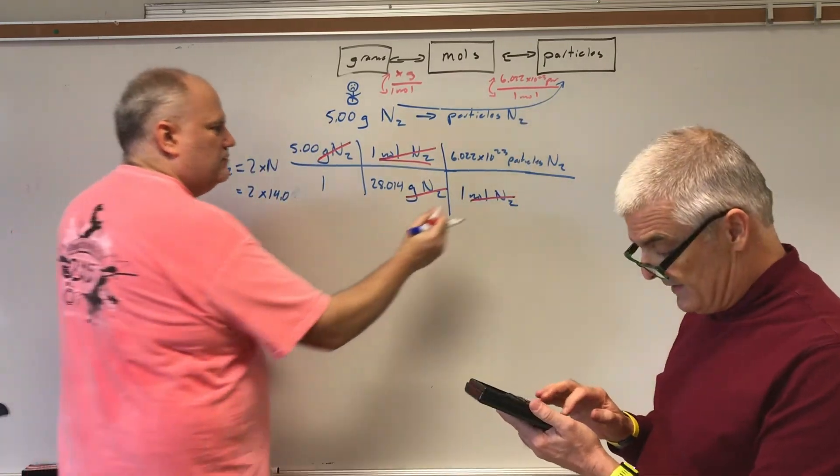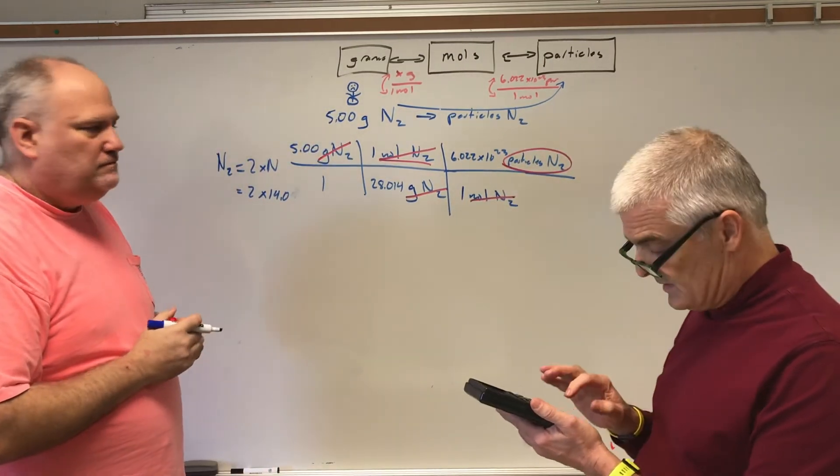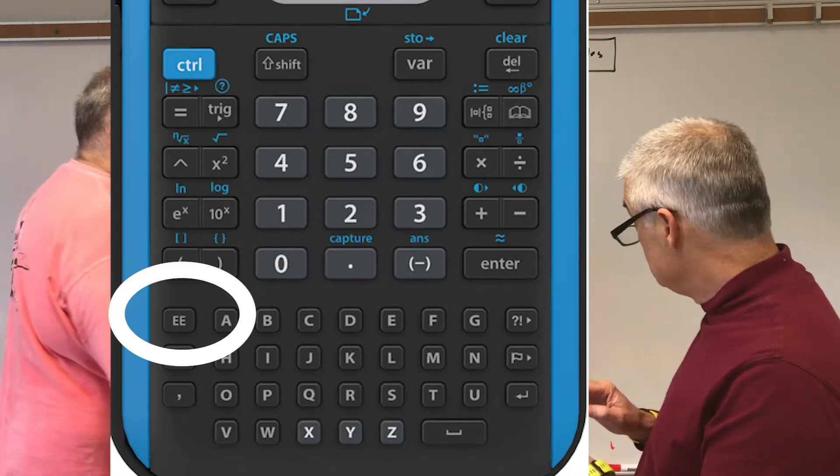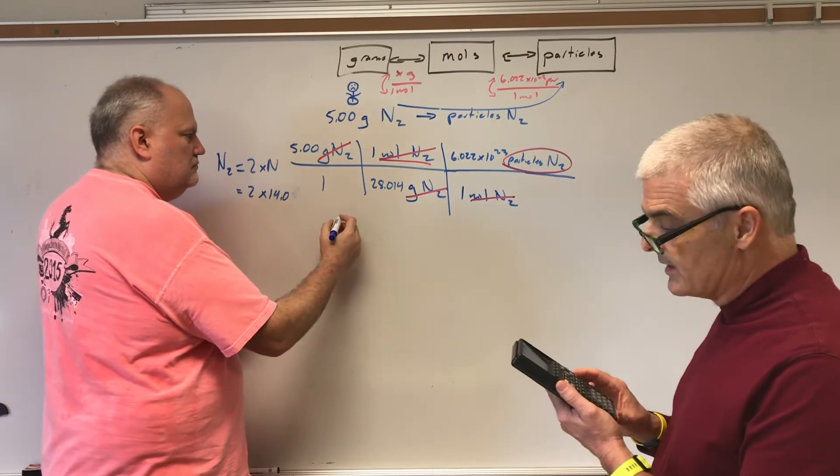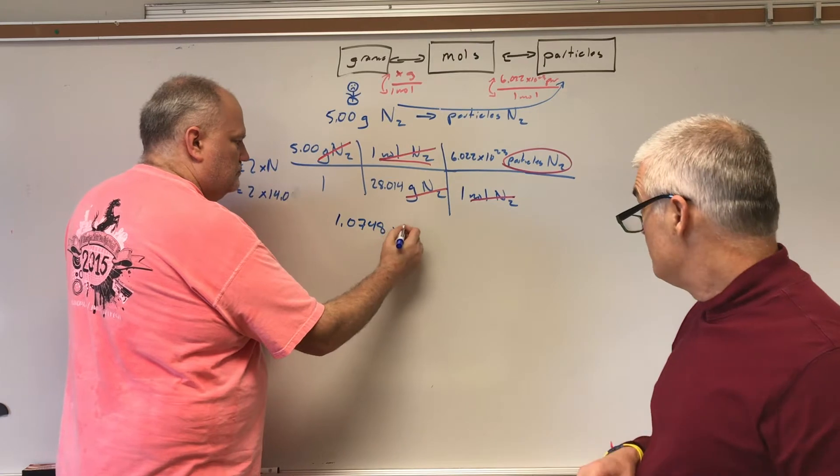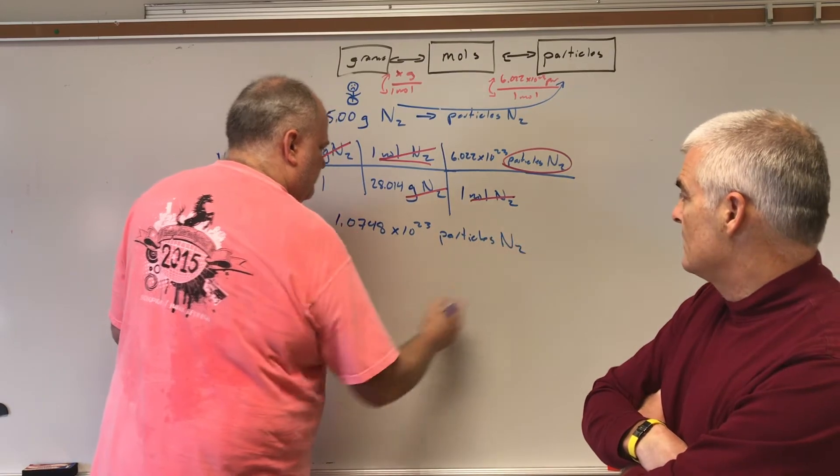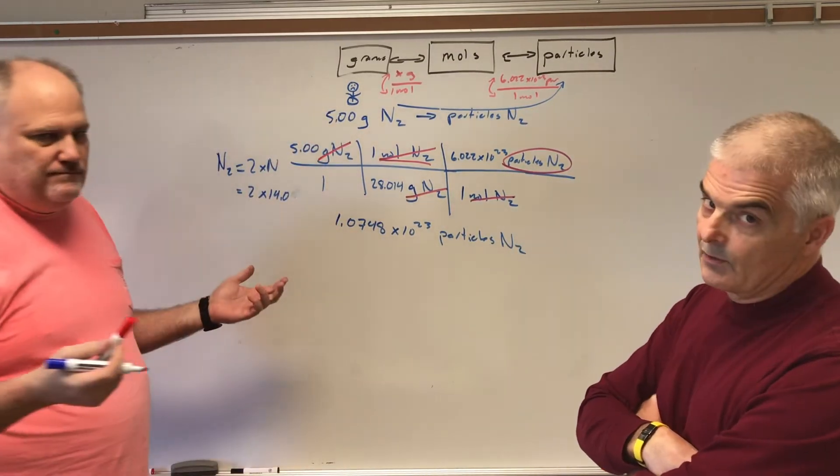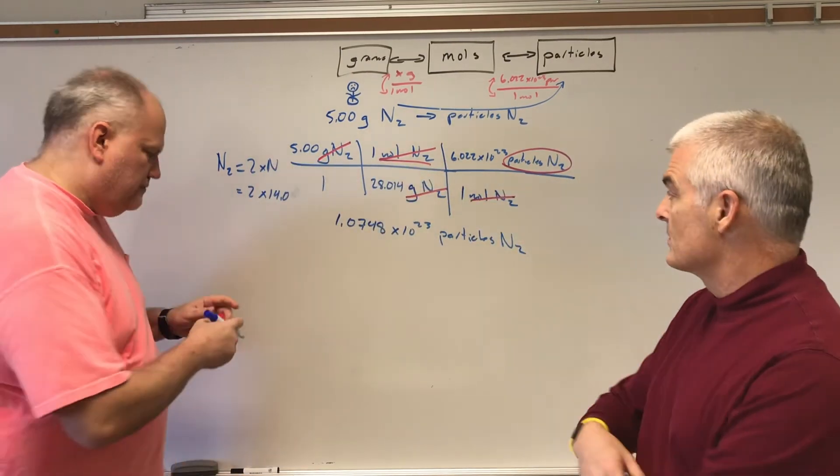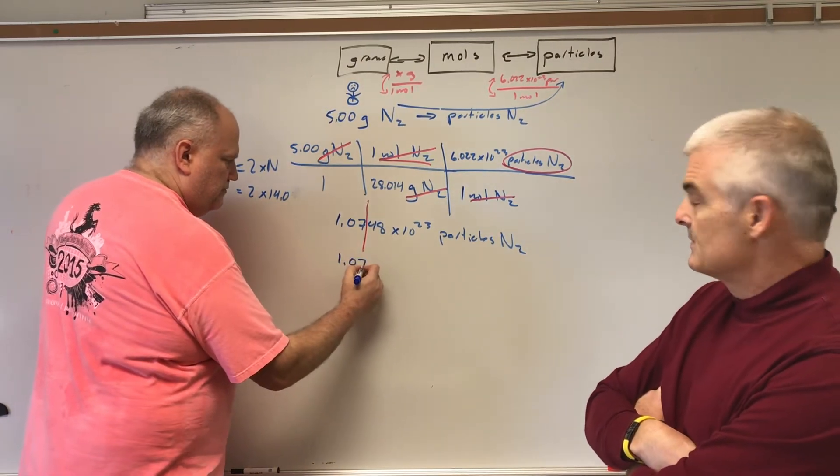So my calculator, 5 divided by 28.014 times 6.022. I'm going to push the EE button, EE23, and I get the grand total of 1.0748 times 10^23 particles of N2. Significant figure-wise, we're going to keep three significant digits. So this is simply going to just be 1.07 times 10^23.